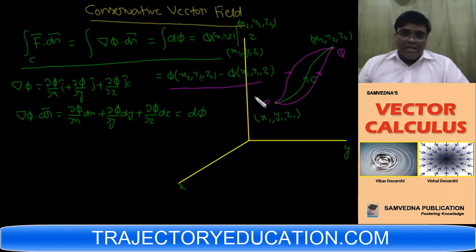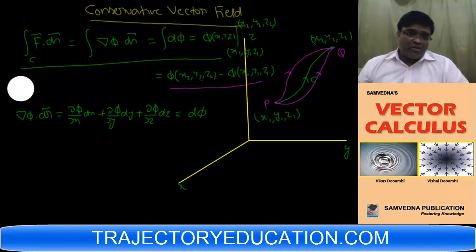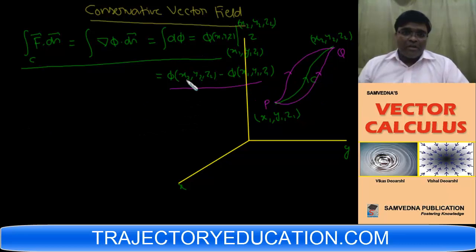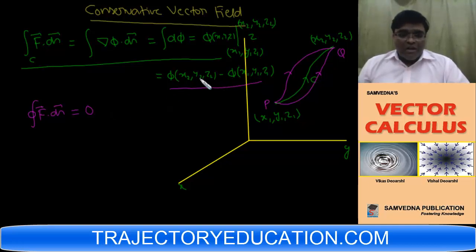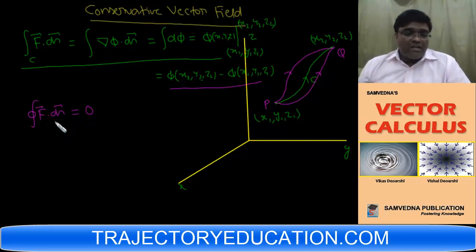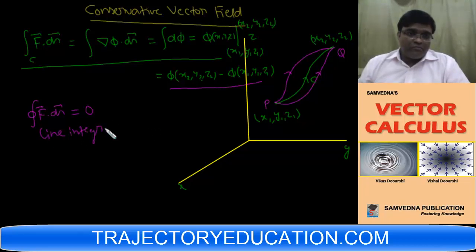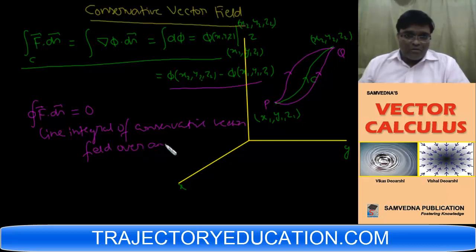This is a very important property of conservative vector fields. Now, if I consider a closed curve, the initial and final points coincide. In that case, the line integral of F dot dr of a conservative vector field over any closed curve will be zero, because the two coinciding points give Phi minus Phi, which is zero. The line integral of a conservative vector field over any closed curve is always zero.